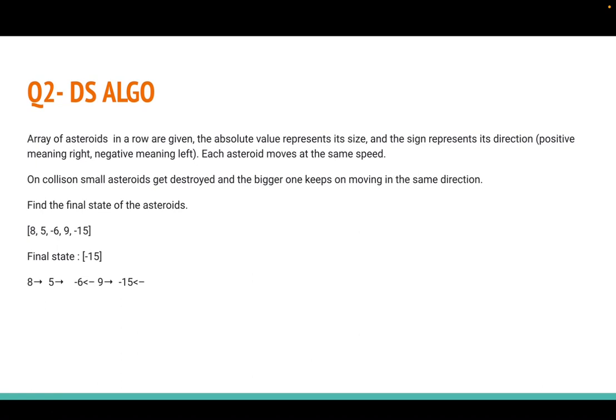The next question was also an array question. You're given a set of asteroids. The array values represent the weight of these asteroids. Positive means the asteroid is moving right, negative means moving left, and all asteroids move at the same speed.